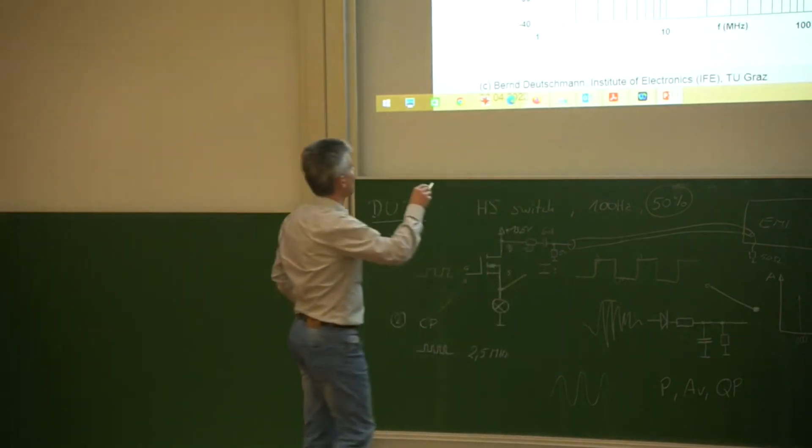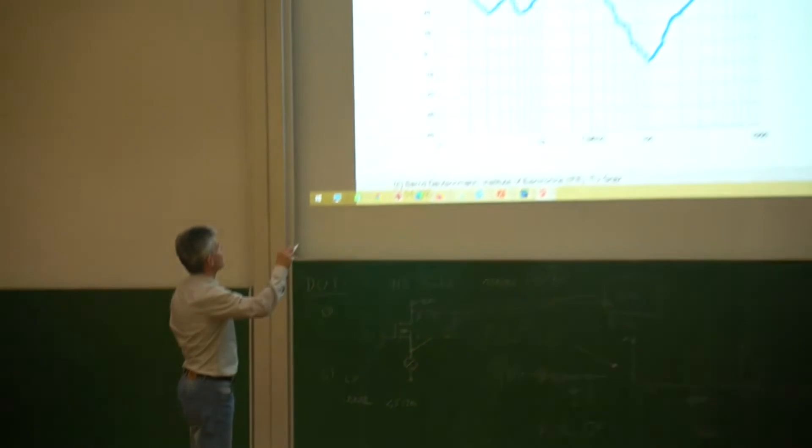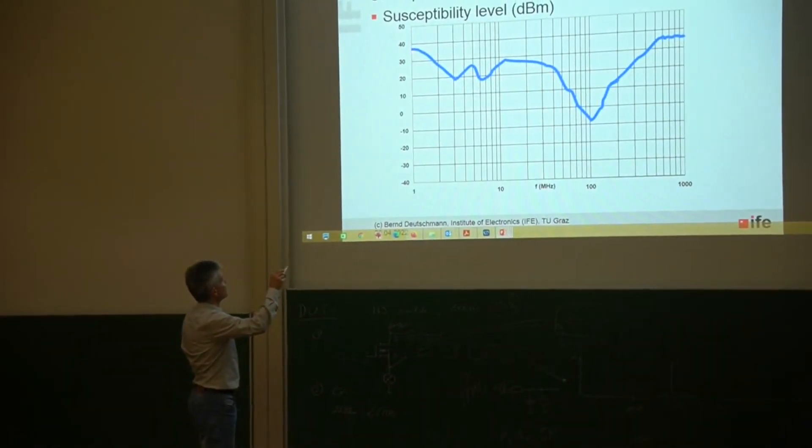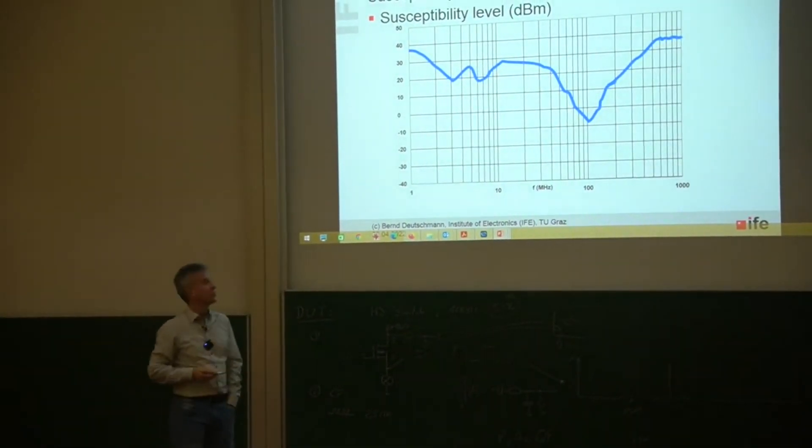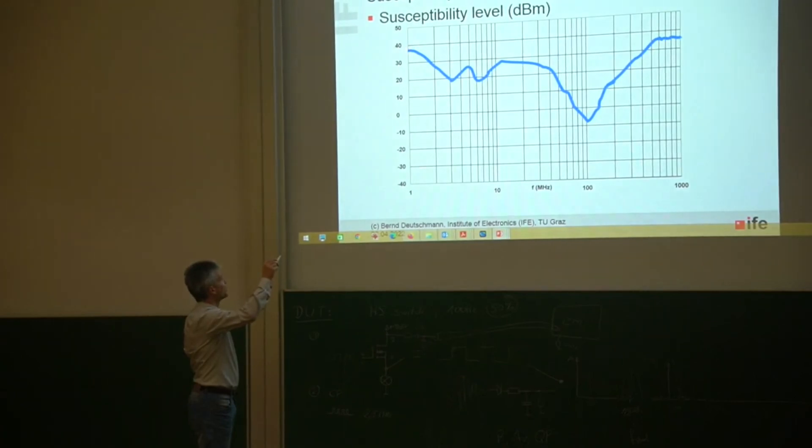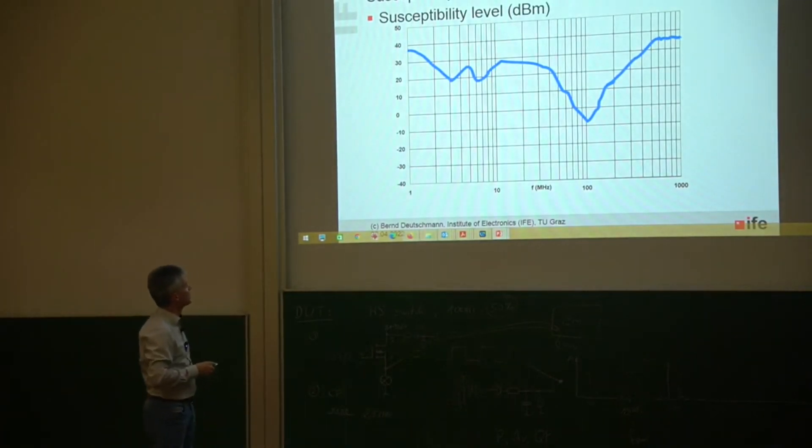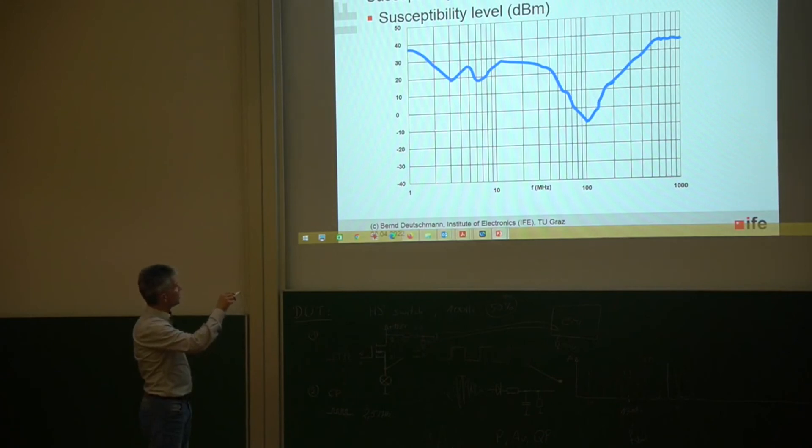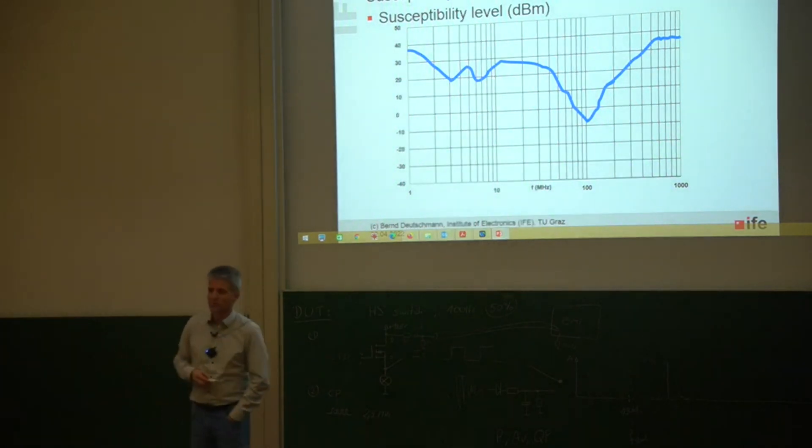Let's suppose we are increasing the amplitude until our operational amplifier is not amplifying at 10 anymore. This is then the point that we are marking here in this diagram. And we are moving the frequency step 1 forward to 2 megahertz for example, increasing again until the operational amplifier is again not amplifying with 10 anymore.